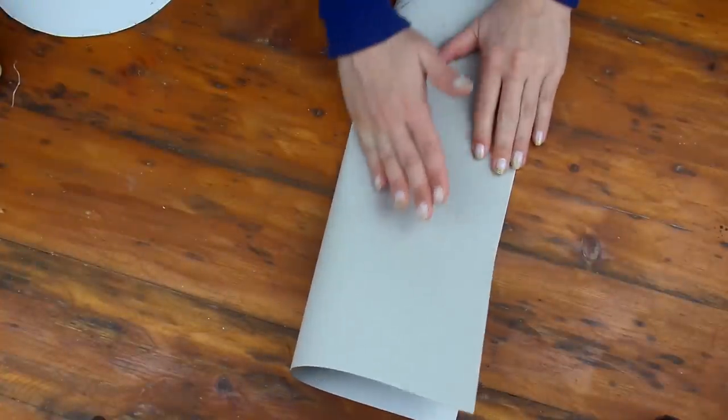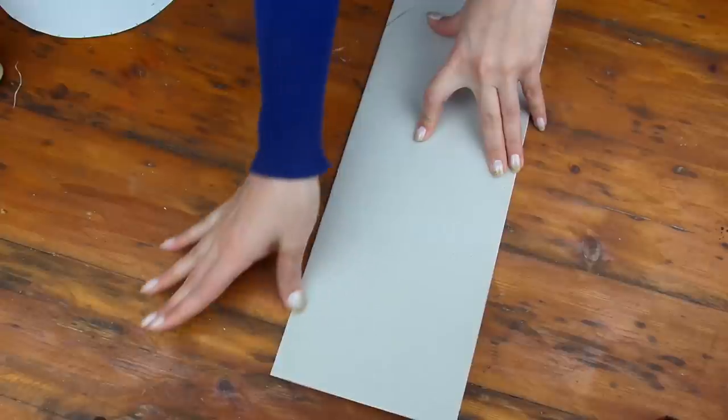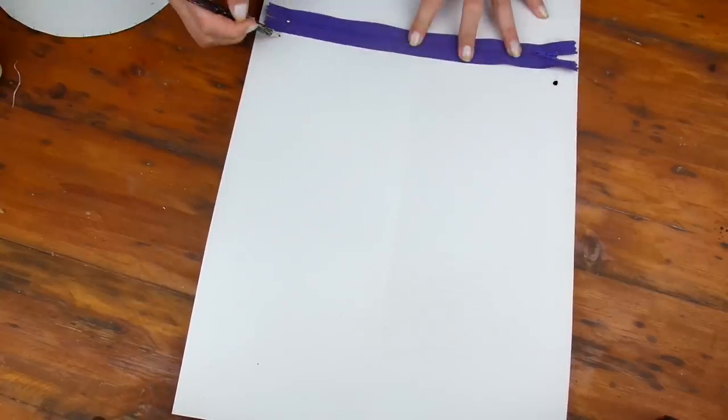Step number one, just like most DIYs you need to make a pattern of the shape you want to give to your backpack. I chose an alien face because I was browsing through Tumblr that day and I got carried away but you can choose whatever you want, preferably something simple.